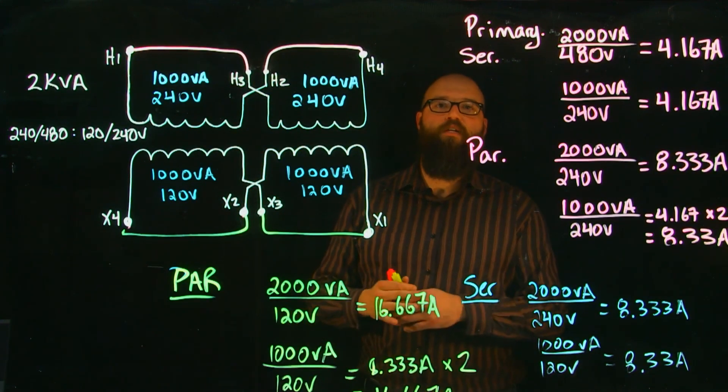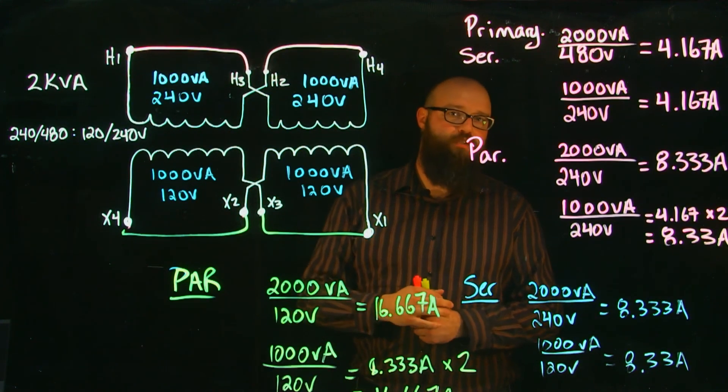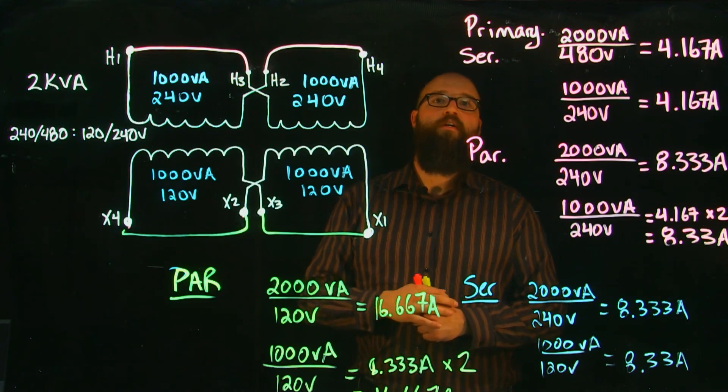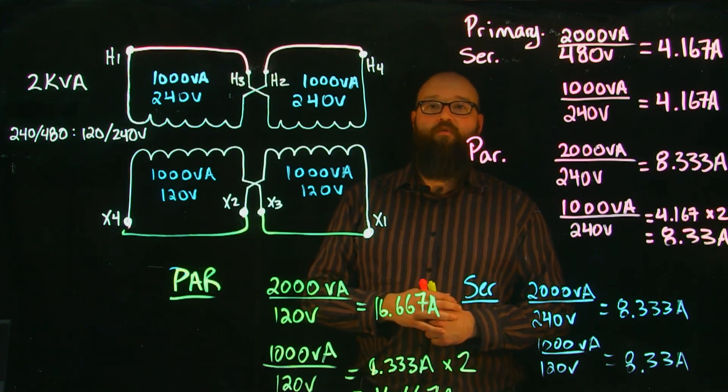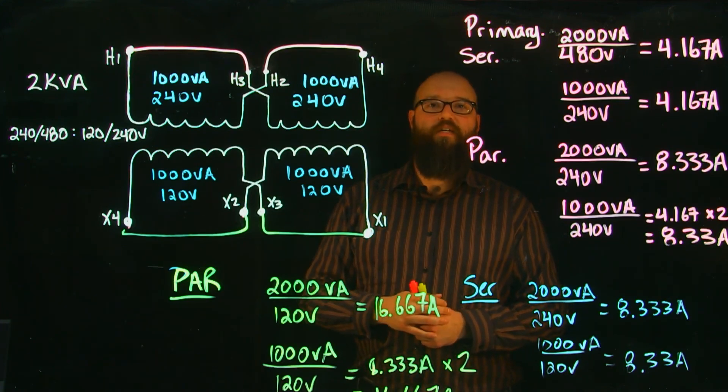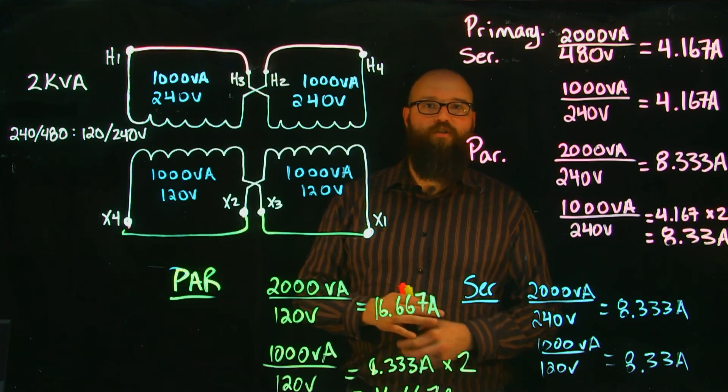It's the series or parallel connection that changes our voltages, which in turn gives us different currents. Hopefully this has helped clarify multi-winding transformer connections you could encounter. Thanks for watching, see you next time, bye.